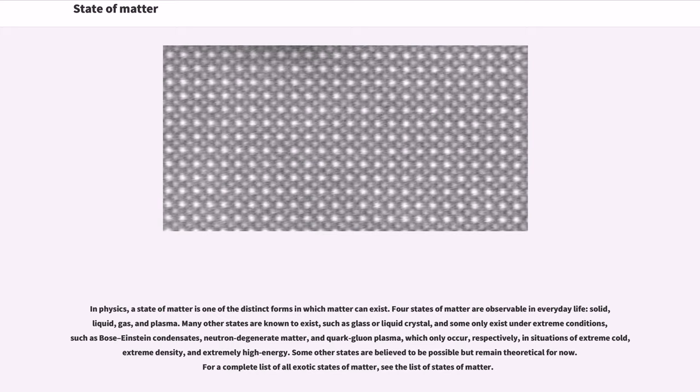State of Matter. In physics, a state of matter is one of the distinct forms in which matter can exist. Four states of matter are observable in everyday life: solid, liquid, gas, and plasma.